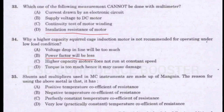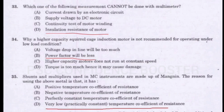Question number 35. Shunts and multipliers used in MC (moving coil) instruments are made up of manganin. The reason for using the above metal is that it has: Option A - Positive temperature coefficient of resistance. Option B - Negative temperature coefficient of resistance. Option C - Perfectly constant temperature coefficient of resistance. Option D - Very low, practically constant temperature coefficient of resistance. Answer is Option D: Very low, practically constant temperature coefficient of resistance.